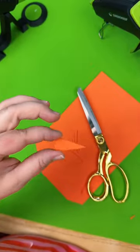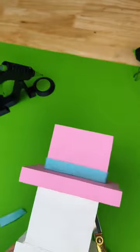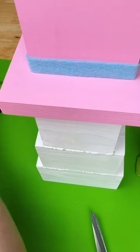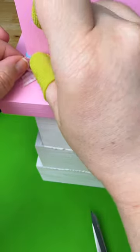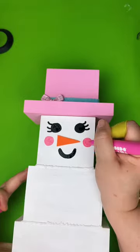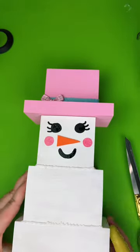And then we're going to glue on a little piece of blue felt and a bow to the hat. We're then going to draw on the face and glue on the carrot nose.